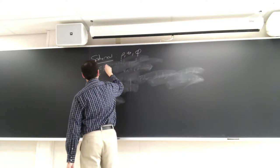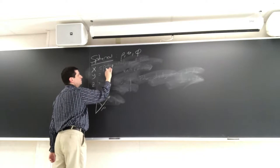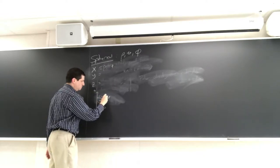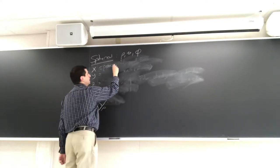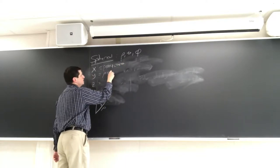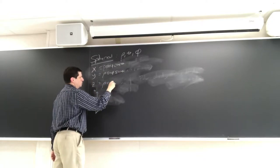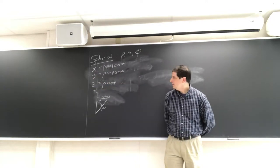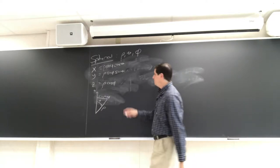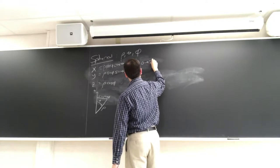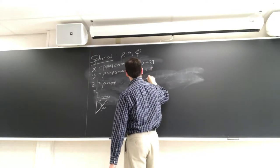So x = ρ sin φ cos θ, y = ρ sin φ sin θ, and z = ρ cos φ. That gives you x, y, z if someone tells you ρ, θ, and φ. Theta goes from 0 to 2π, phi goes from 0 to π, and rho goes from 0 to whatever the radius is.